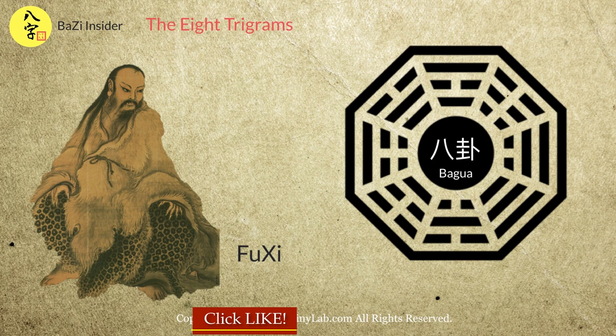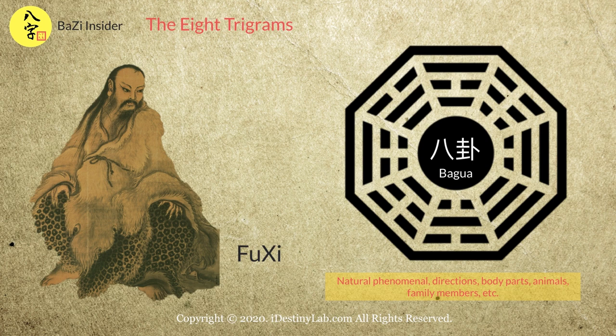This system of Ba Gua was originated from Fu Xi a few thousand years ago. Ba Gua represents a lot of things like natural phenomena, directions, body parts, animals, family members and many more. Each symbol inside the 8 trigrams is known as a Gua.